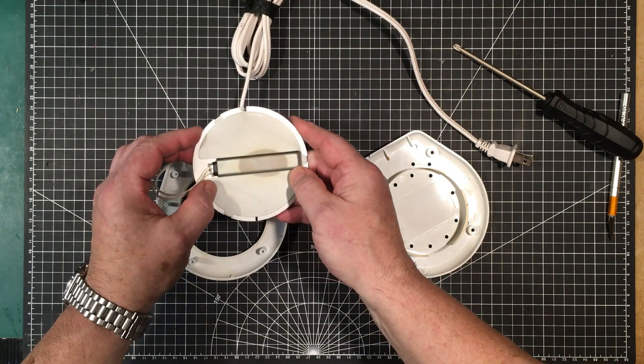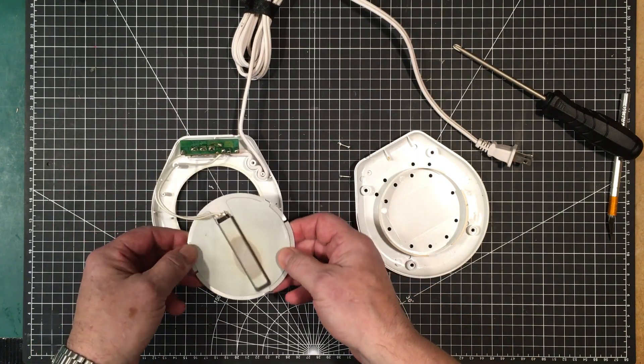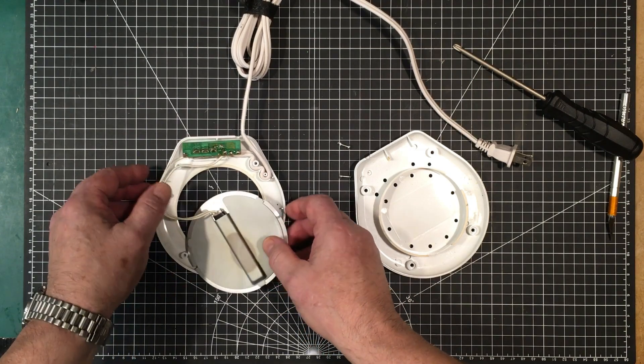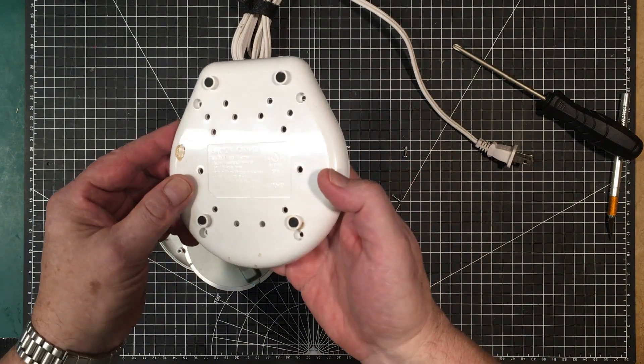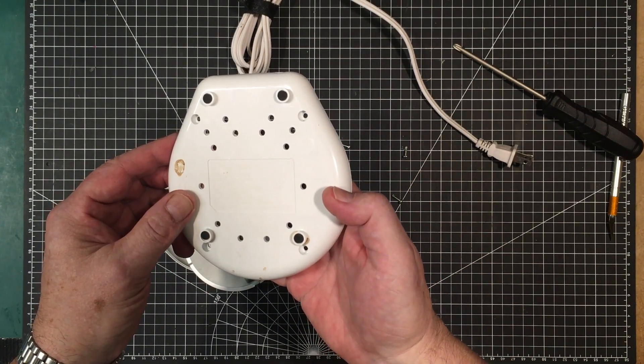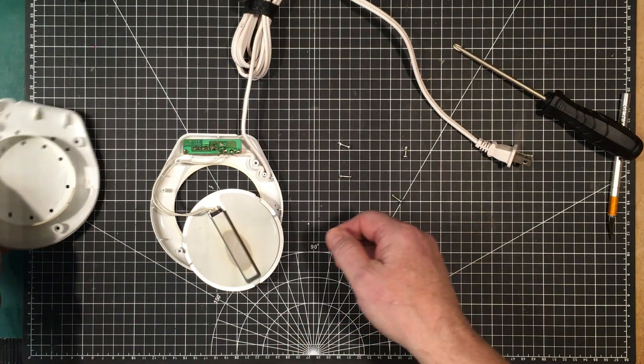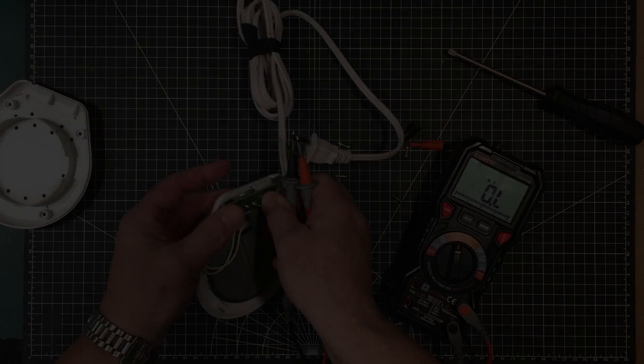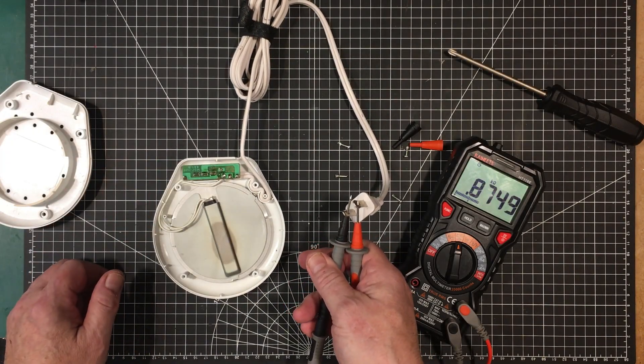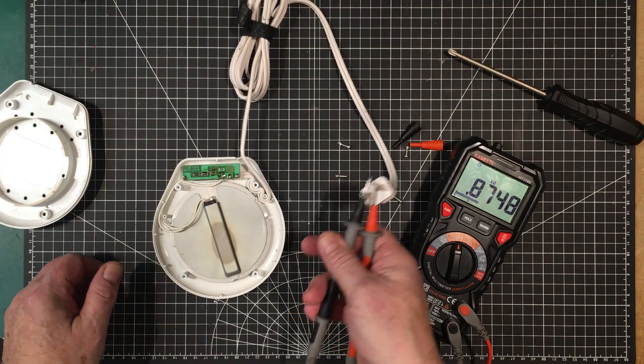Without being destructive. I would just imagine it's a resistor. So it's not very powerful. It's only 17 Watts. So let's measure the resistance of it. So 875 Ohms.